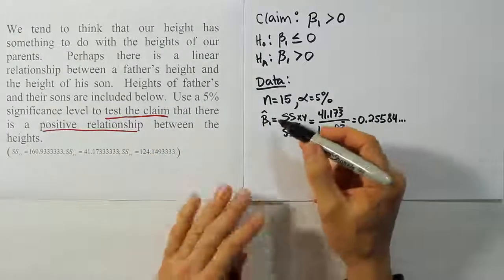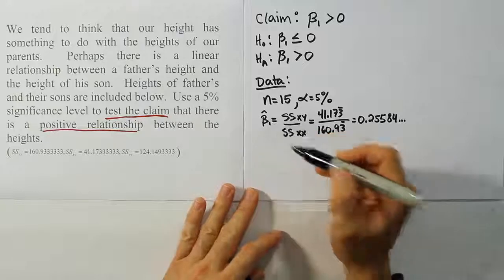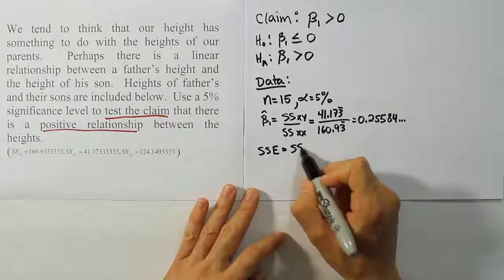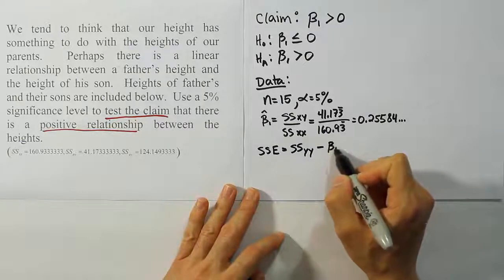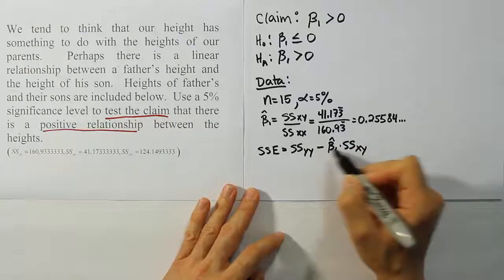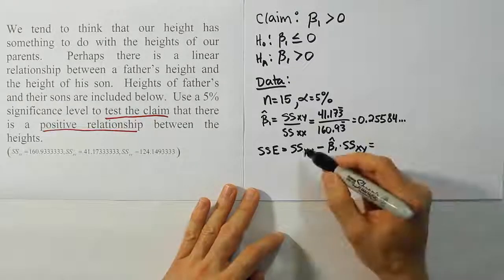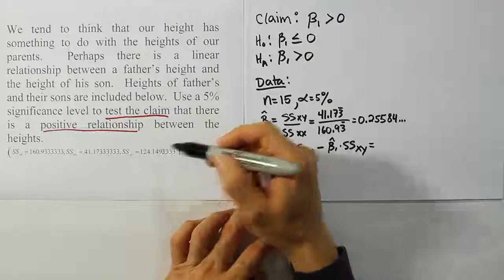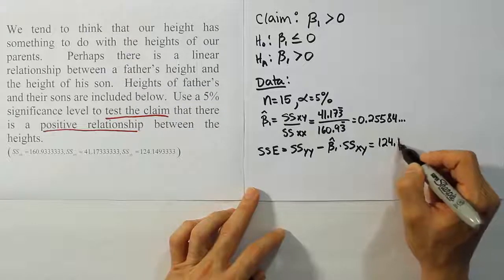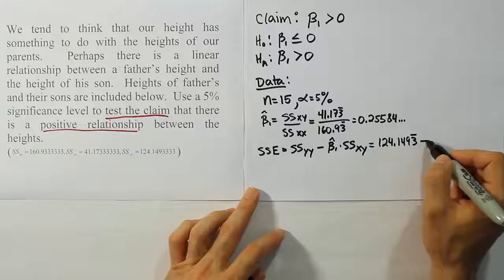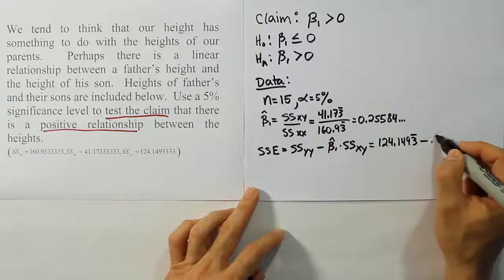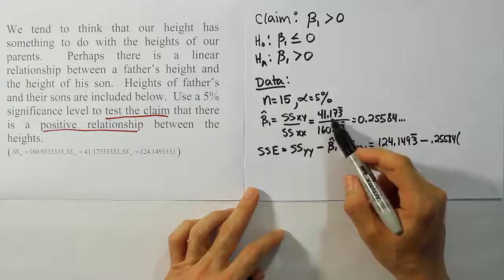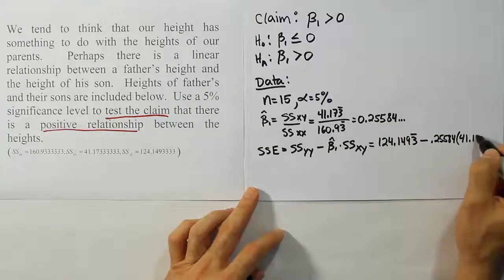Now, from there, the next step of the problem is going to be to take our information here, beta 1, and to use it to get the sum of square for error. So SSE. To get SSE, we need to remember the formula is SSYY minus beta 1 hat times SSXY, the mixed term. Okay, so let's plug that stuff in and see what that gives us. So the SSYY in this problem is supposed to be 124.1493 repeating. So 124.1493 repeating minus beta 1 hat, which we saw was 0.25584 essentially, times SSXY, which we saw was 41.173. 41.173 repeating.